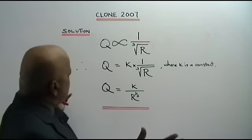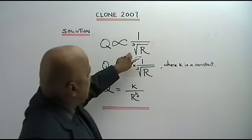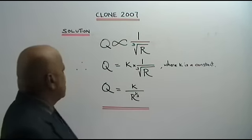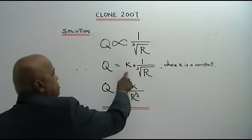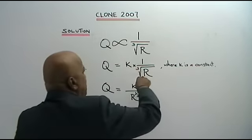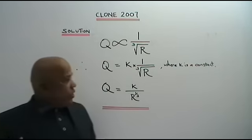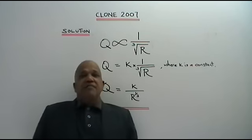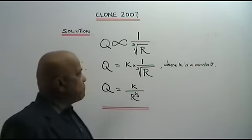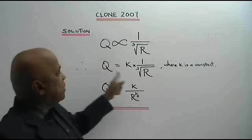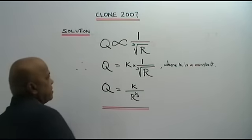Now, like I said, the normal technique, we write Q varies inversely as the cube root of R. And the golden step, therefore Q equals to K times 1 over cube root of R, where K is a constant. Now, the only thing different in this question is we don't have to find the value of K. We just need to find the relationship between Q and R. You are supposed to show the relationship.